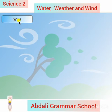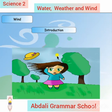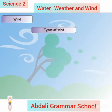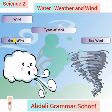Wind introduction: wind is moving air. If the air is not moving, then it is not wind. Types of wind: there are two types of wind — first is good wind, second is bad wind.